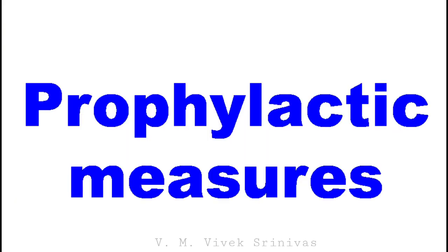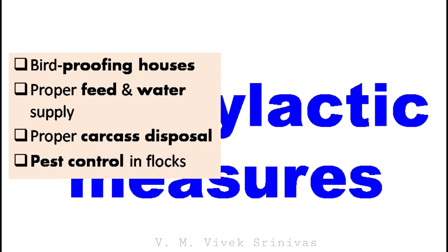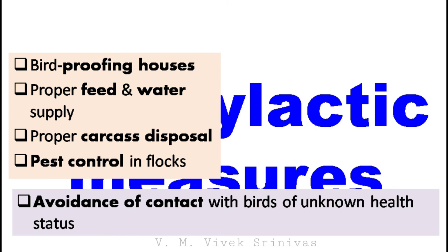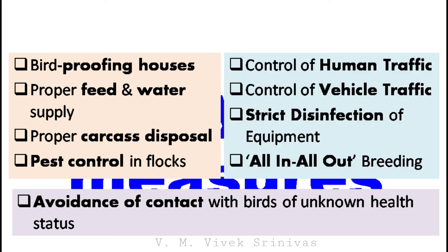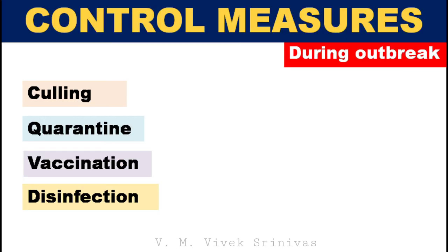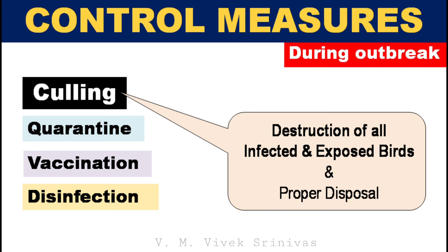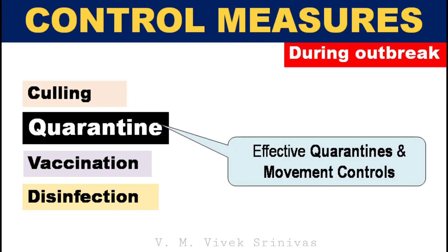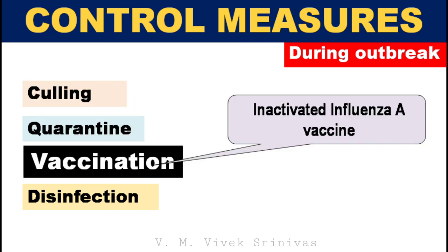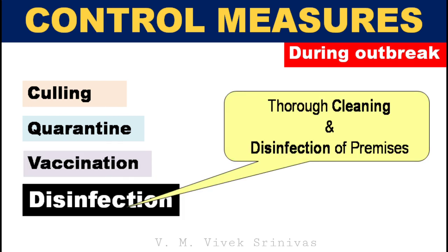Prevention and control — prophylactic measures. The following measures should be established to prevent all types of viral and communicable diseases in poultry farming: bird-proofing houses, proper feed and water supply, proper carcass disposal, pest control including insects and mice control, avoidance of contact with birds of unknown health status such as newly acquired domesticated poultry, pet birds, and wild or feral birds, control of human traffic so employees do not have contact with outside birds, control of vehicle traffic, strict disinfection of equipment, all-in-all-out management with one age group per farm, and disinfection between groups. During outbreaks: destruction of all infected and exposed birds with proper carcass disposal, a gap of 21 days before restocking, effective quarantine and movement controls, vaccination using an inactivated vaccine with the epizootic strain, and thorough cleaning and disinfection of the premises.